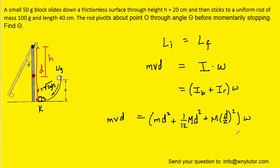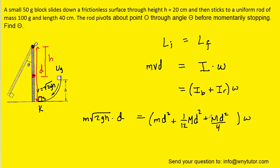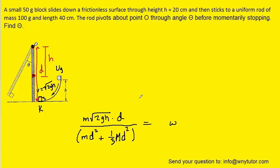So here we have the conservation of angular momentum expanded out. The term v here was the initial velocity of the block as it reached the bottom of the surface, equal to the square root of 2gh, so we fill that in for v. We can also simplify the terms inside the parentheses — squaring d/2 gives d²/4, and then adding one-twelfth md² plus one-fourth md² gives one-third md². We then divide both sides by the term in parentheses to isolate the angular velocity, and then we can move on to phase three of the problem.